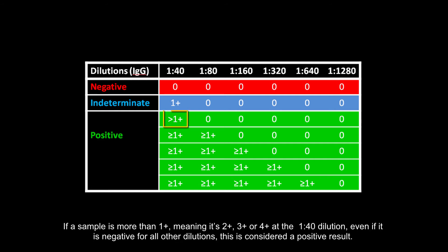If a sample is more than 1 plus, meaning it's 2 plus, 3 plus, or 4 plus, at the 1 to 40 dilution, even if it is negative for all other dilutions, this is considered a positive result.